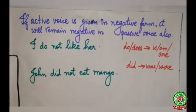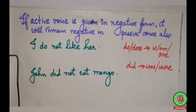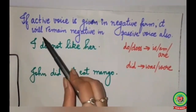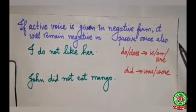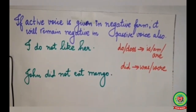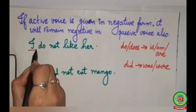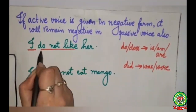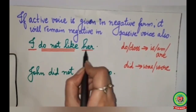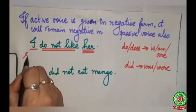Now we will discuss some miscellaneous rules of active and passive voice. If the active voice is given in a negative form, it will remain negative in passive also. First example: I do not like her. I is the subject, do not like is the verb, her is the object. Her will come in the beginning and will become she.